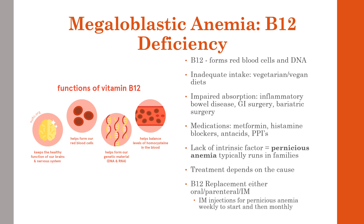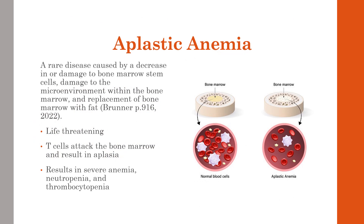Those with pernicious anemia will have gradual clinical manifestations: a smooth red tongue, mild diarrhea, extreme pallor especially of mucous membranes, and paresthesias in the extremities — especially the lower extremities. They may also have difficulty maintaining balance. Without B12 treatment, this can lead to heart failure.